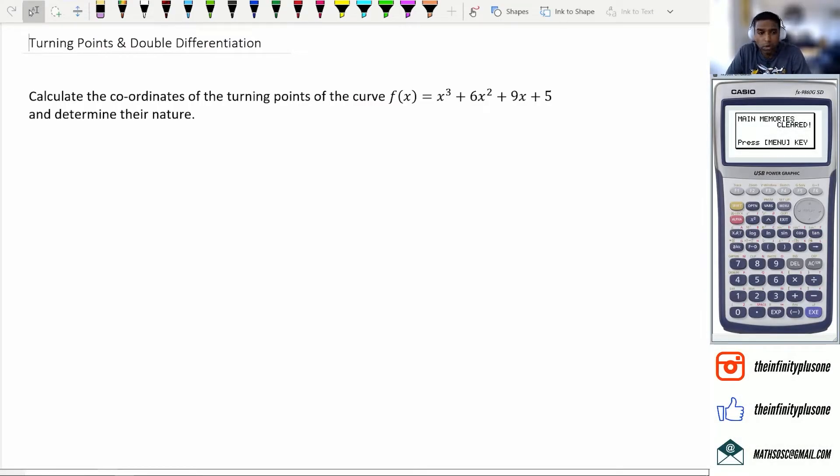Alright guys, so what we've got here is a question for this function and we've got to figure out the coordinates of the turning points and whether it's a maximum or a minimum. Just to get you started, I'm going to put this graph in a calculator just to see what it looks like. So just go down into graph mode and type in the equation: x cubed plus 6x squared plus 9x plus 5.